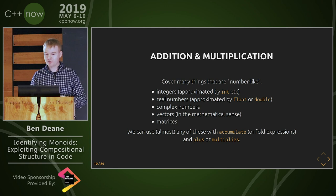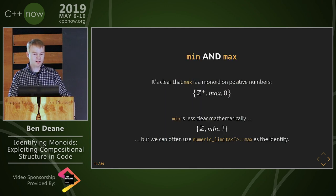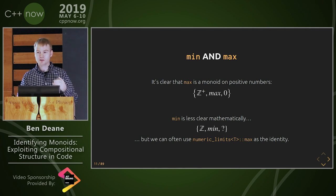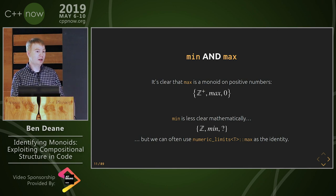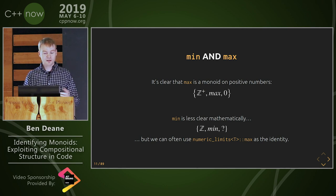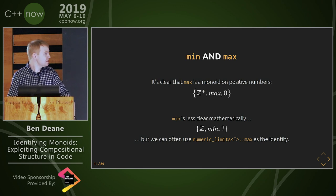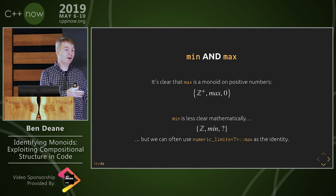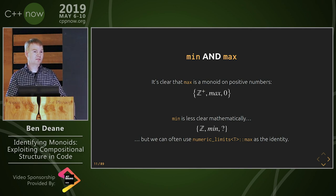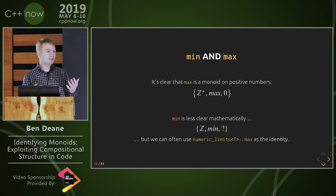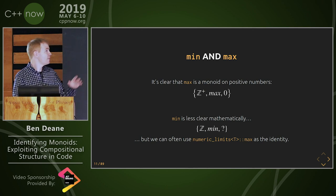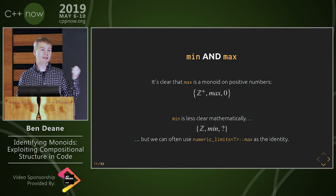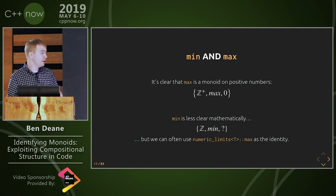The next thing that we come across all the time are the min-max operations. Max is a monoid on the positive integers where 0 is the identity and the operation is just max. Min is less clear in math, but in computer science we work in a finite space, so we can often use numeric_limits::max as the identity. Both of these sort of have mirror images — if you flip negative, positive integers at max, similarly negative integers at min.